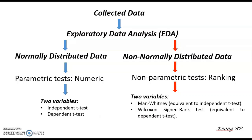The independent t-test is used when the two groups or variables are independent from each other — for example, the first group could be weight and the second group could be height. The dependent t-test is used to compare two groups where the variables are dependent on each other — for instance, feeding frequency and the weight of a chicken. The weight of the chicken is basically dependent on the frequency of feeding; if you feed the chicken more often, the weight will be more.